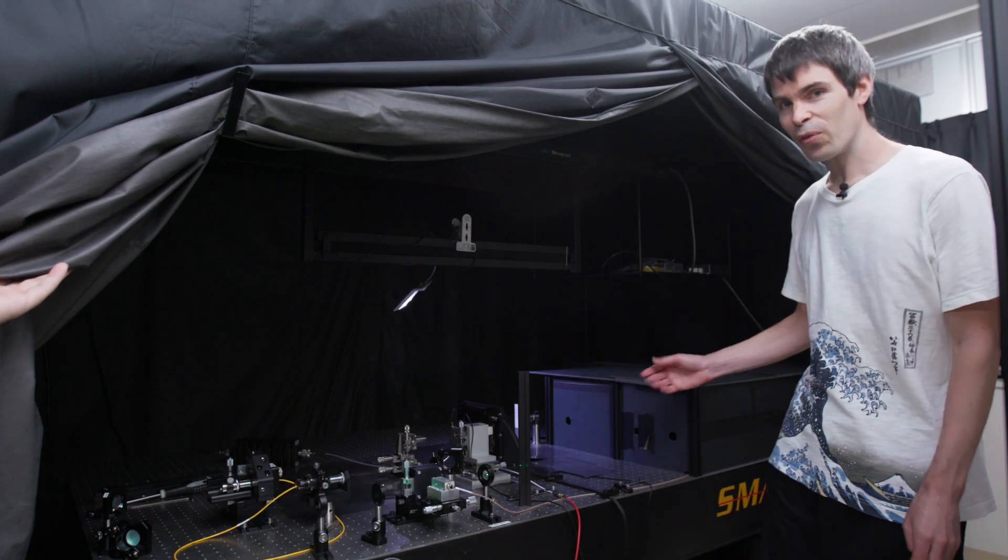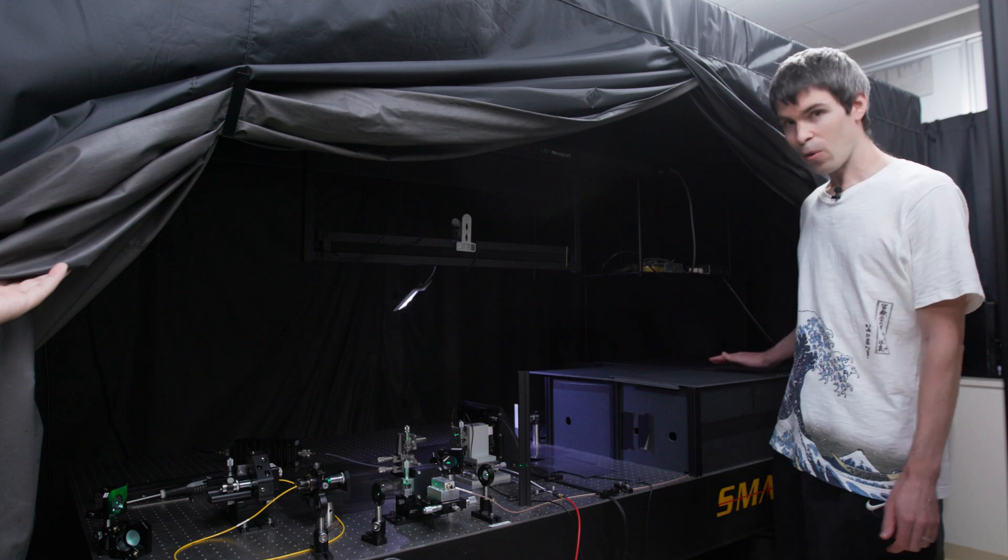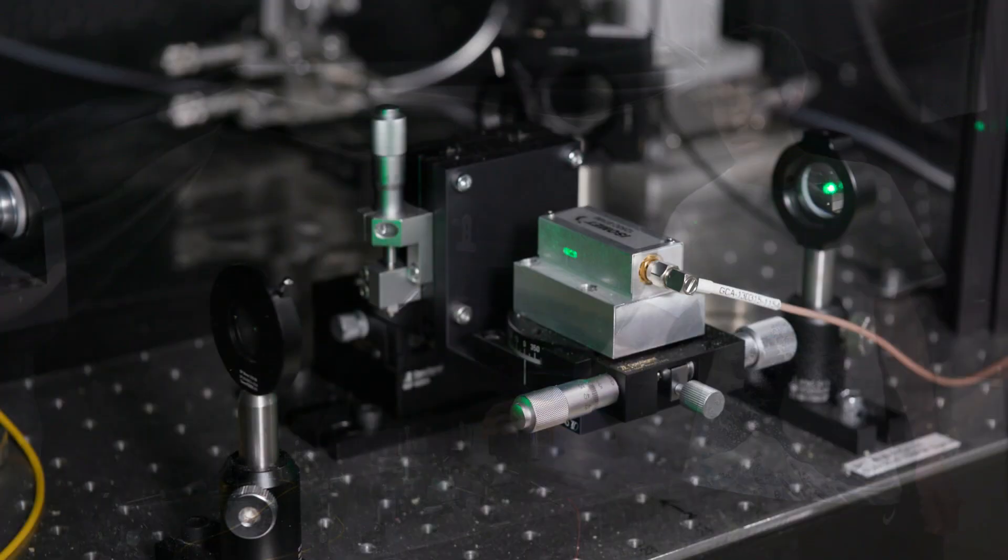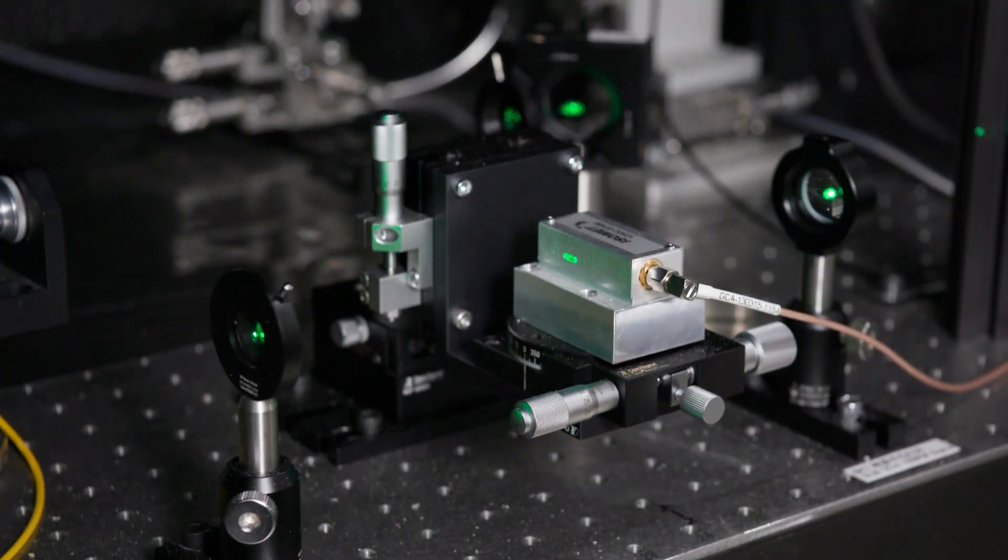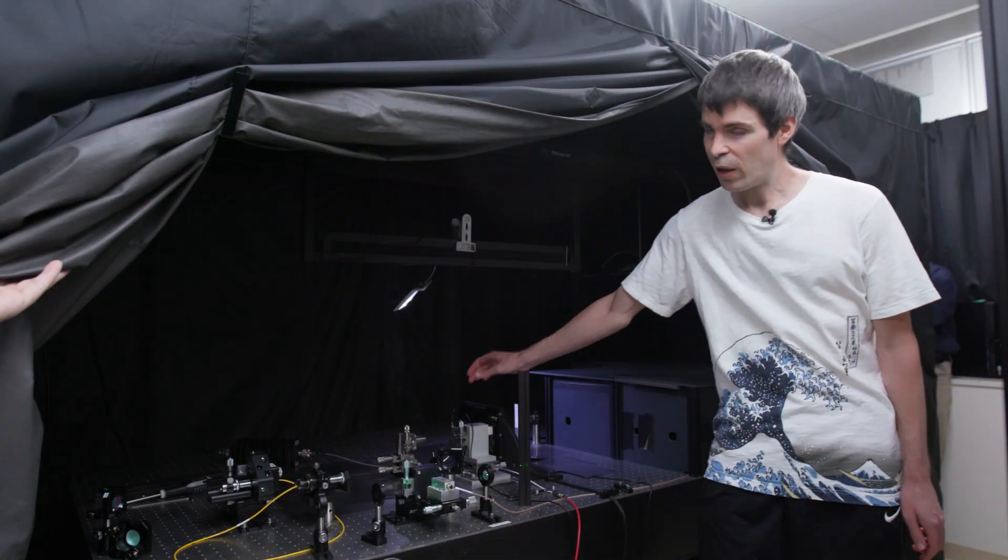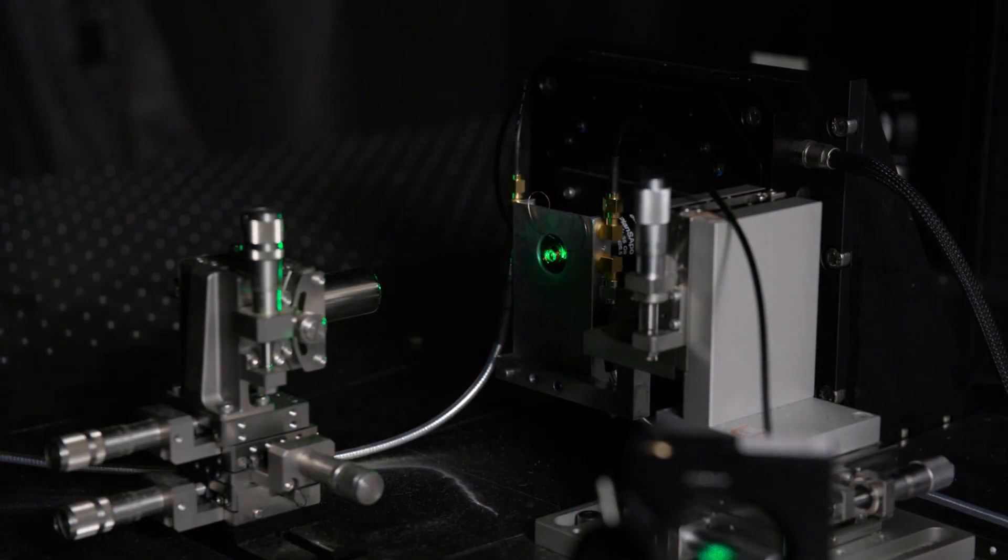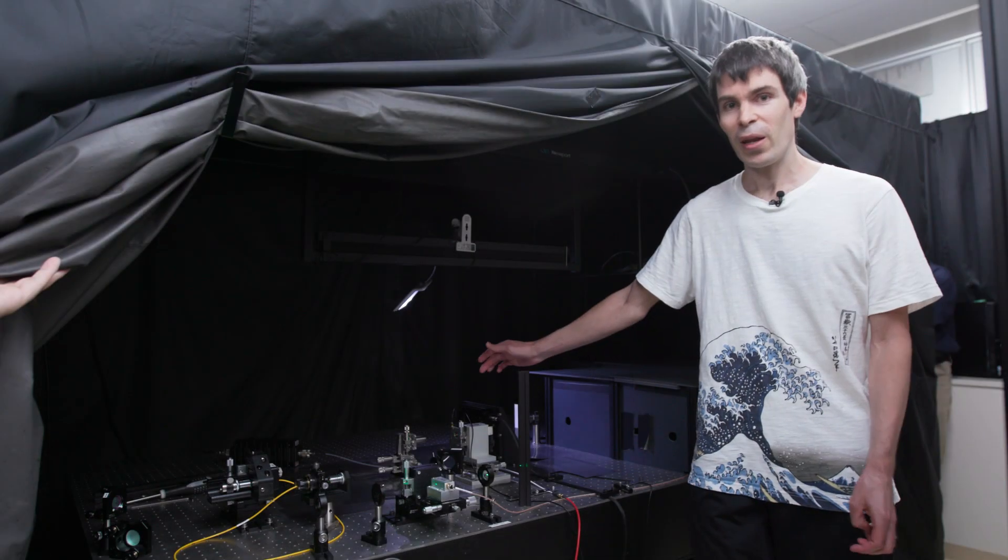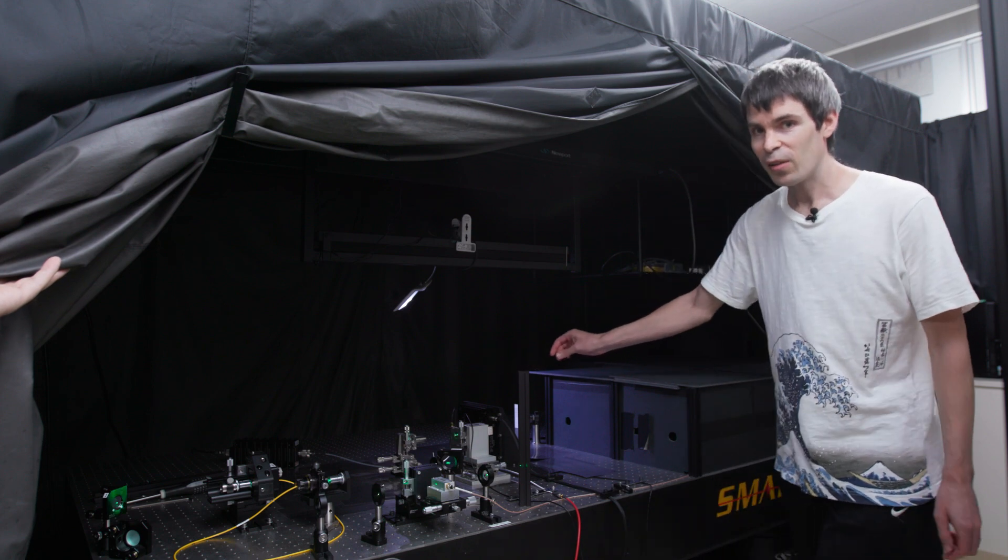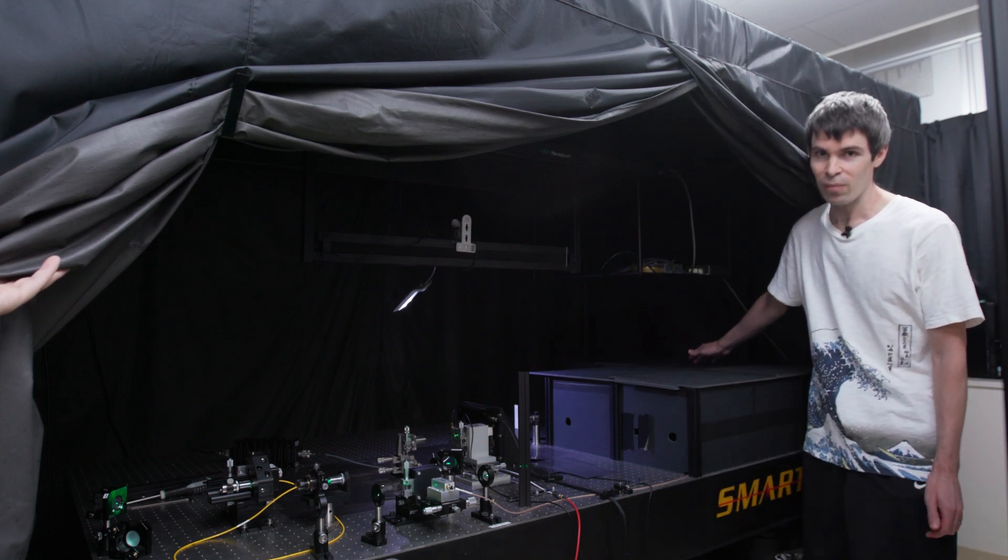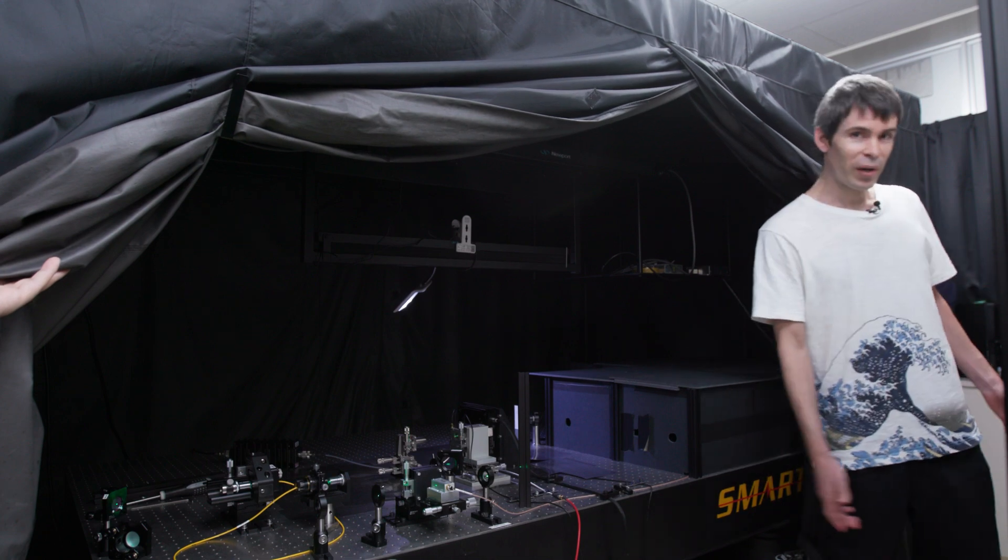Here is an optical table where we do our experiments. The laser comes from here. Then, in this part, we can create a pulse sequence which goes to here where the sample is. The NV-center emits red light depending on the spin state, which is detected by the photon detectors in these black boxes. We can control the system over here.